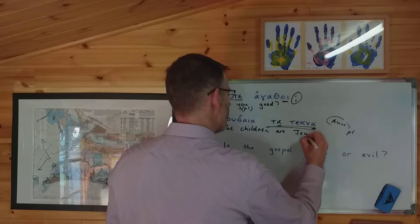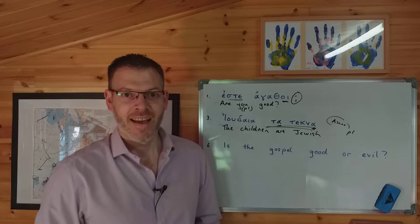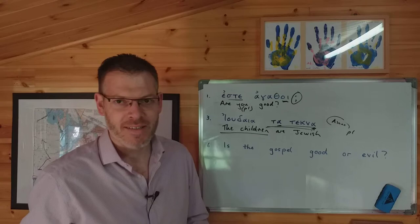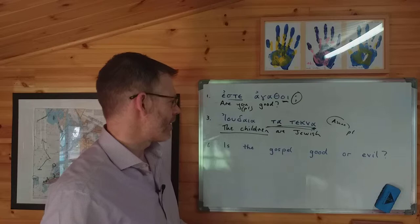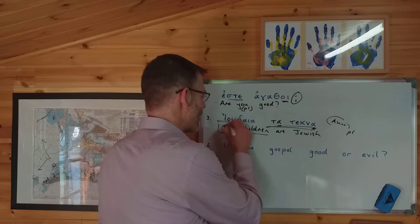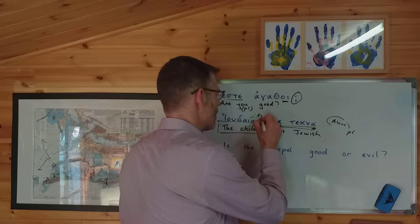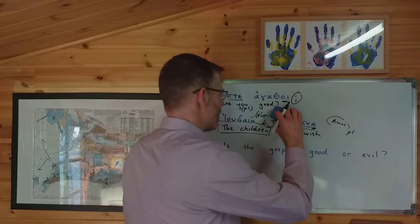In this case, because tatekna is definitely a noun, it's probably safest to say that's the subject. It wouldn't really make sense to say 'Jews are the children' — you'd have to say the children are the subject of the invisible Amy. And the form of Amy which is invisible is the one that goes with third person plural: A, Estin, Esmen, Ester, A, Sin — that's what's been omitted from the middle of this sentence, which is perfectly legitimate as we explained in the previous video.